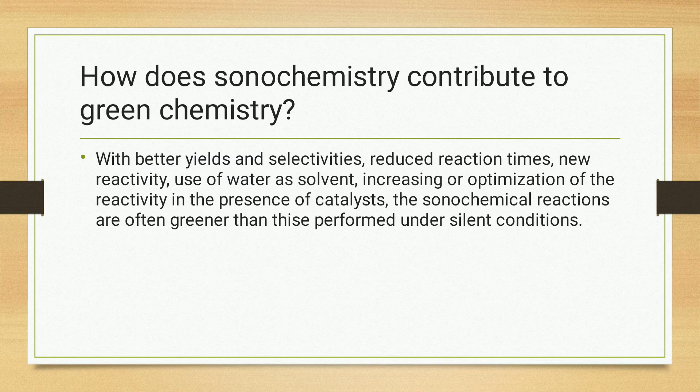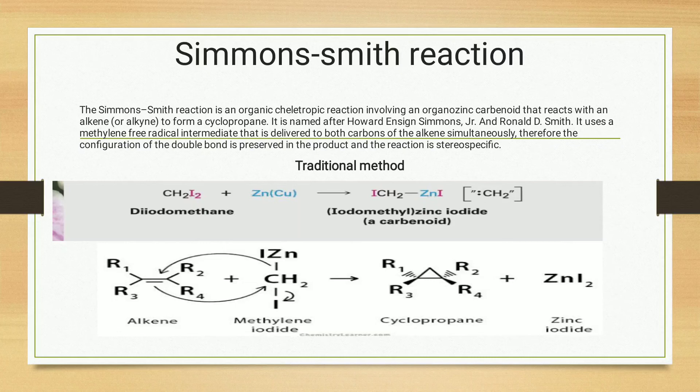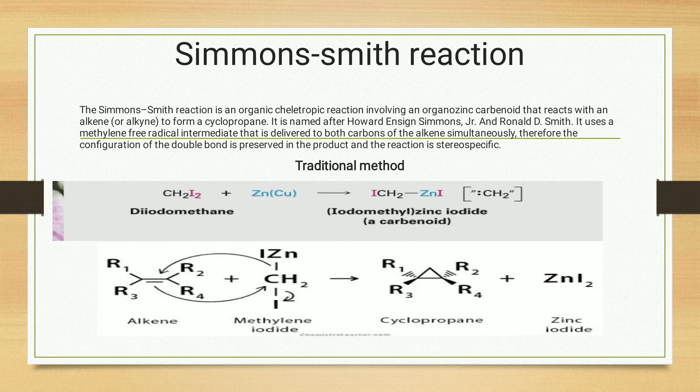Next, we are going to discuss the Simmons-Smith reaction. The Simmons-Smith reaction is a reaction involving an organozinc carbenoid that reacts with an alkene to form a cyclopropane. It uses a methylene free radical intermediate that is delivered to both carbons of the alkene simultaneously. Therefore, the configuration of the double bond is preserved in the product, and the reaction is stereospecific.